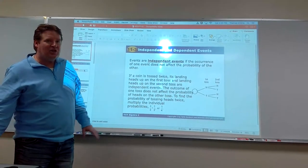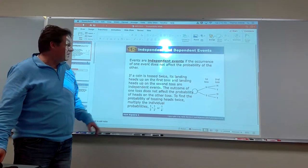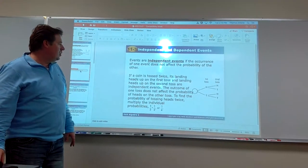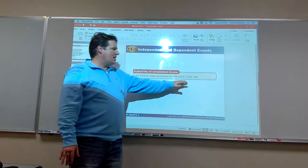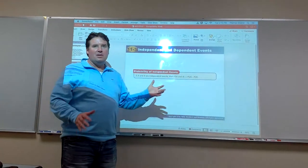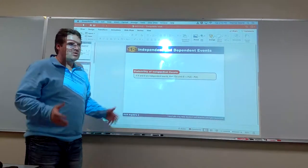Alright, so one does not change the probability or affect the other one from happening. So in order to find the probability of A and B both happening, you just take the probability of A times the probability of B. So multiply the two probabilities together.